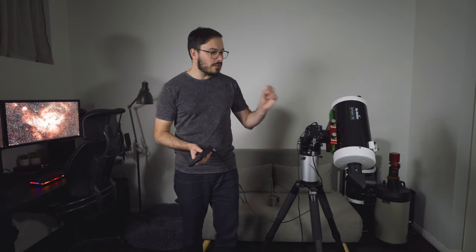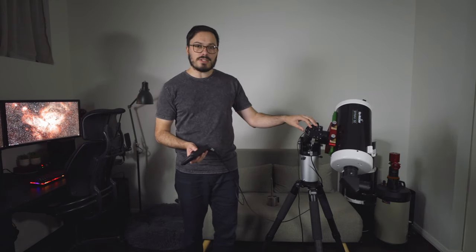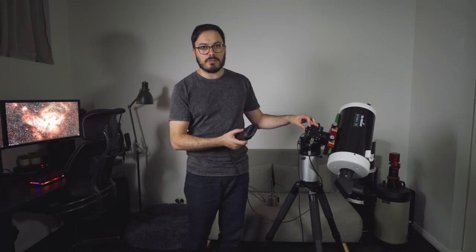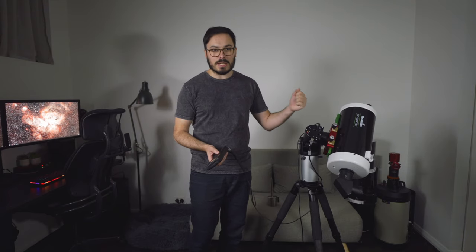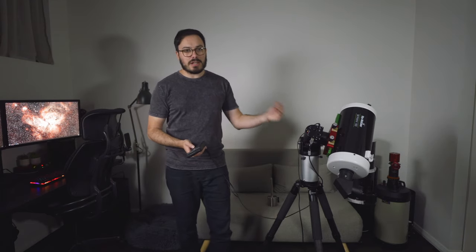Now hopefully you can hear that sound, that is the mount moving and as you can see the telescope is beginning to back drive. As soon as you turn the mount back on it instantly stops as those motors are re-engaged. So this is what back driving is.